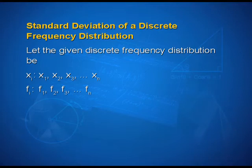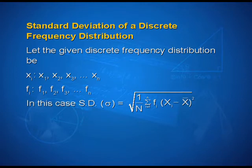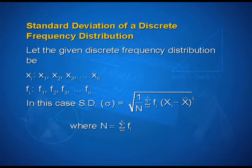Now let us study about the standard deviation of a discrete frequency distribution. Let the given discrete frequency distribution be xi varying from x1, x2, x3 so on till xn, and frequencies ranging from f1, f2, f3 to fn correspondingly. In this case, standard deviation sigma is equal to the positive square root of 1 upon n into summation i varying from 1 to n of fi into xi minus x bar whole square, where n is equal to summation i varying from 1 to n of fi.